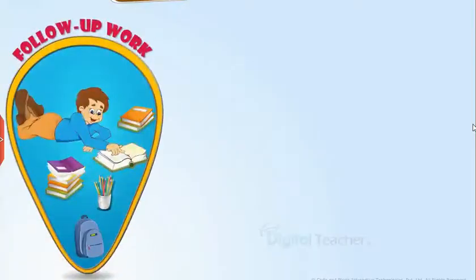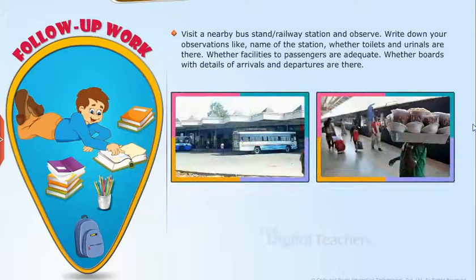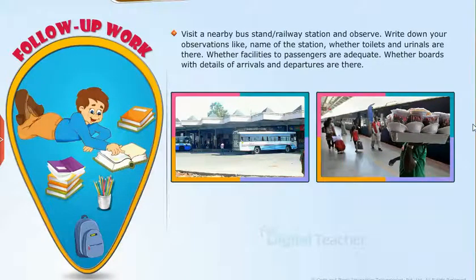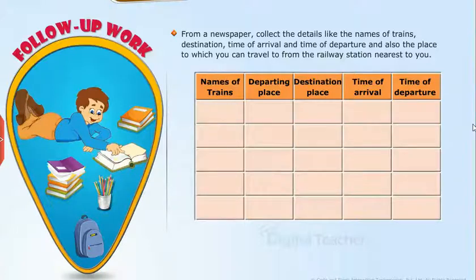Follow-up work: Imagine and write the situation of city junctions without traffic signals in your notes. Visit a nearby bus stand or railway station and observe — write down observations like the name of the station, whether toilets and urinals are available, whether passenger facilities are adequate, and whether boards with arrival and departure details are present. From a newspaper, collect details like the names of trains, destination, time of arrival and departure, and the places you can travel to from the nearest railway station.